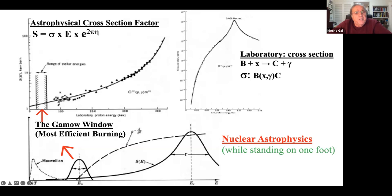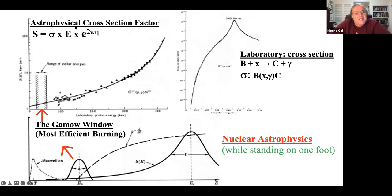We multiply out the cross section and remove most of those nine orders of magnitude. Quantum mechanics tells us the cross section goes as π/k². Multiplying by energy removes all the kinematics. What's left behind is the astrophysical S-factor. Now instead of nine orders of magnitude, I only talk about a factor of 10 - this is where the nuclear physics lives.